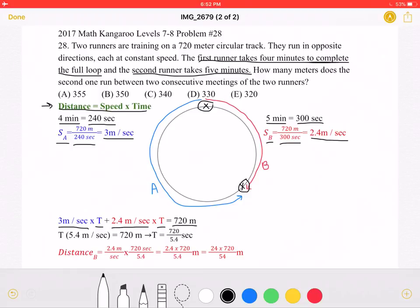Well, now we can factor out the time T and get T times 5.4 meters per second, which is 3 meters per second plus 2.4 meters per second. And this must be equal to 720 meters. So we can simplify that T is equal to 720 over 5.4 seconds.